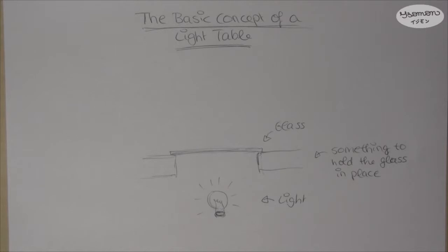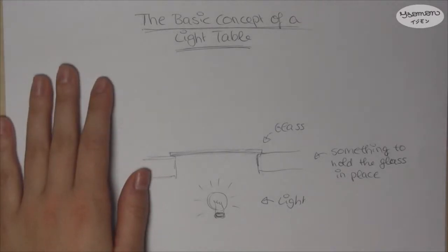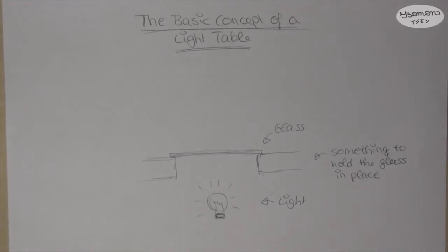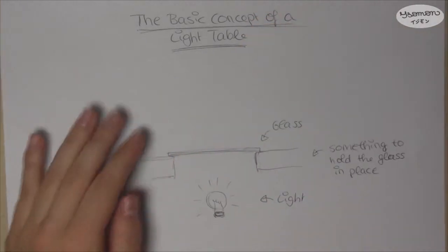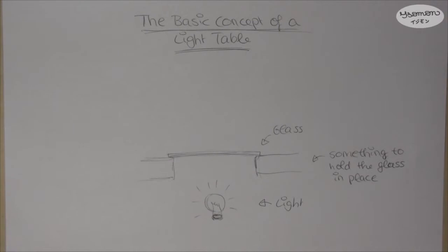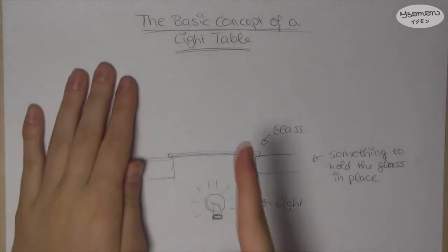So there are a few things which make the whole concept a bit tricky. The first thing is the light because most lamps are built in a way that the light shines downwards onto your table because that's the main reason why you would use a lamp. However, for the light table you need the light to shine upwards.